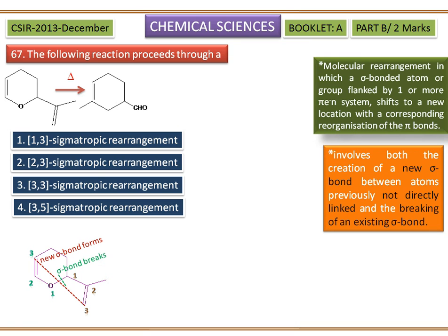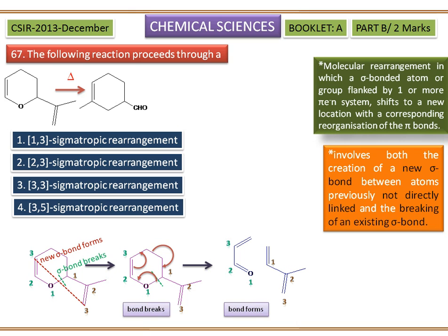It involves both the creation of a new sigma bond between atoms previously not directly linked and the breaking of an existing sigma bond. Now we can see how the electrons are transferred during bond breaks and how the electrons are transferred during bond formation.